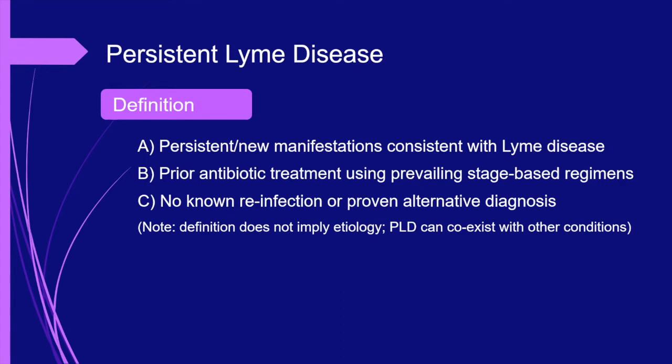Although other terms have been used to describe similar scenarios, I will be using the term persistent Lyme disease. The three main elements of the definition are: an established diagnosis of Lyme disease treated with stage-appropriate antibiotic regimens; persistent manifestations that are consistent with Lyme disease; and no known reinfection or proven alternative diagnosis. The definition takes no position on the underlying pathophysiology. Potential mechanisms will be discussed later.